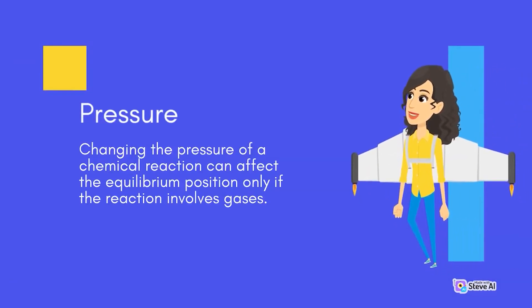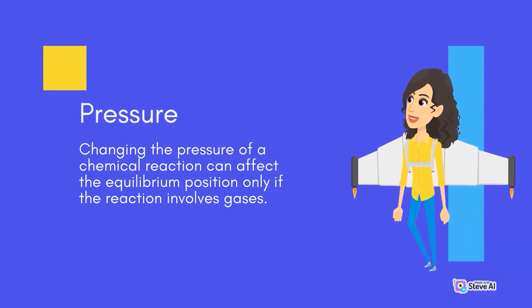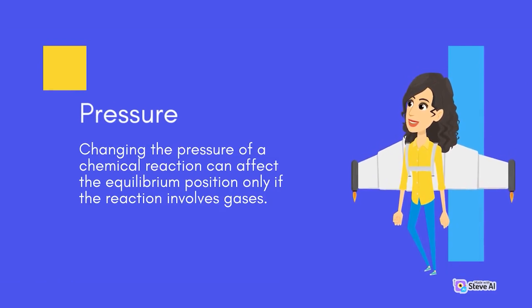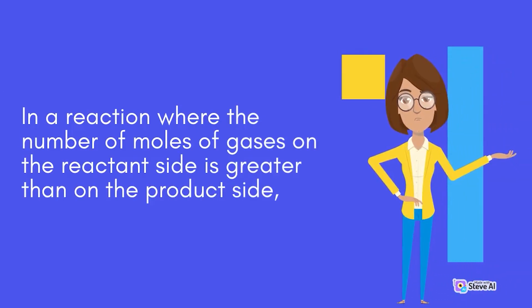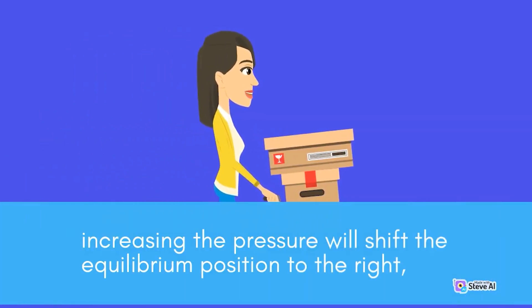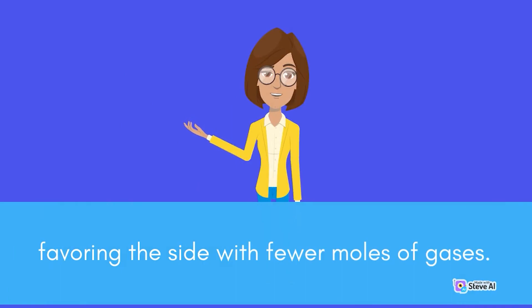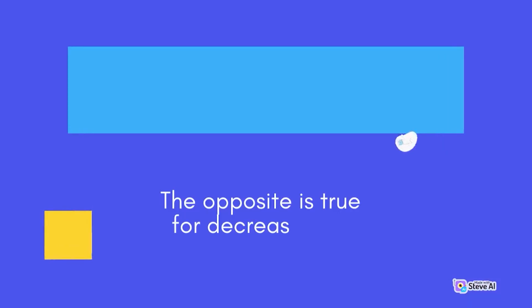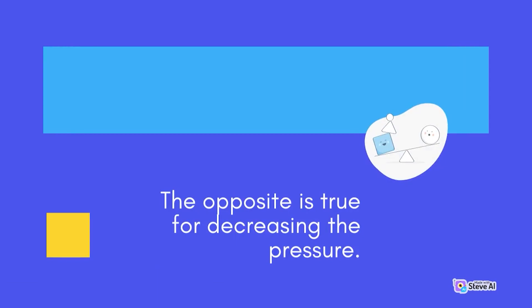Pressure. Changing the pressure of a chemical reaction can affect the equilibrium position only if the reaction involves gases. In a reaction where the number of moles of gases on the reactant side is greater than on the product side, increasing the pressure will shift the equilibrium position to the right, favoring the side with fewer moles of gases. The opposite is true for decreasing the pressure.